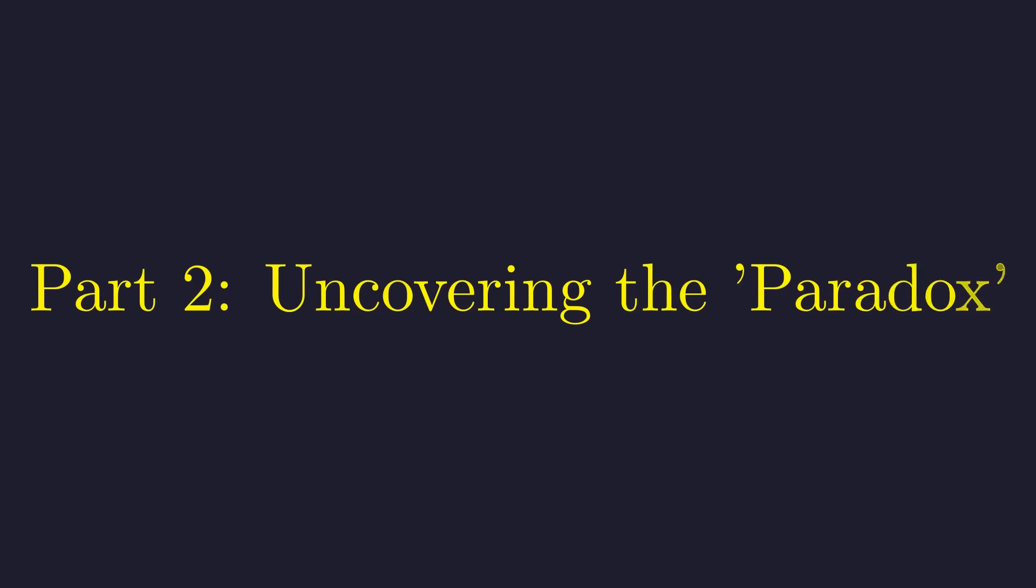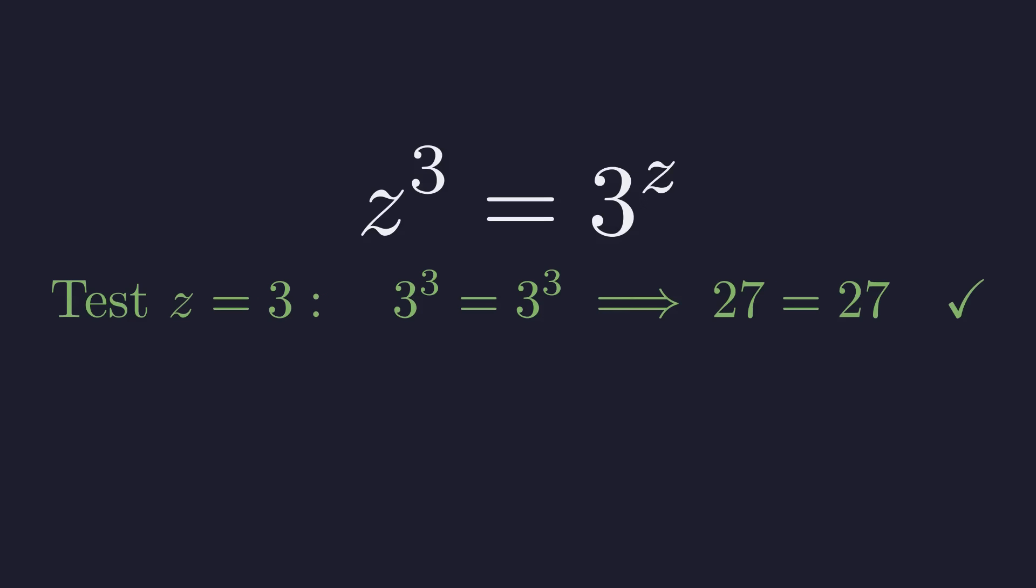Now, armed with this stability test, let's dissect the second expression. We'll set its value to z. By self-similarity, this becomes z equals the cube root of 3 to the z. Cubing both sides gives us z cubed equals 3 to the z. By inspection, we find an integer solution at z equals 3, as both sides become 27.